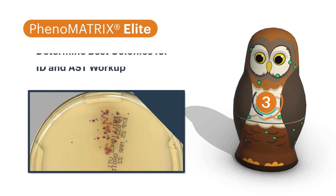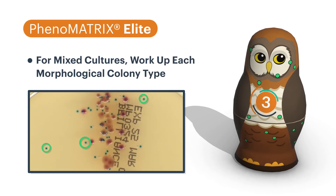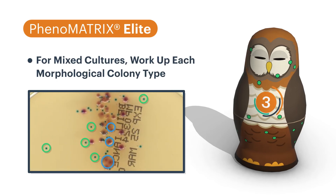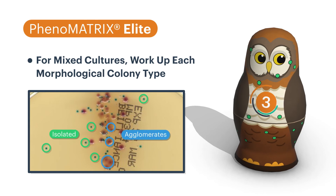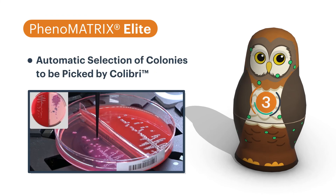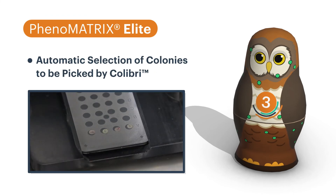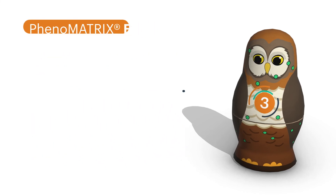For mixed cultures, Tag can be instructed to work up each morphological colony type, choosing only isolated colonies or agglomerates defined as pure. Phenomatrix Elite with Tag automatically and intelligently selects and tags the best colonies to be picked by Colabri for further workup.